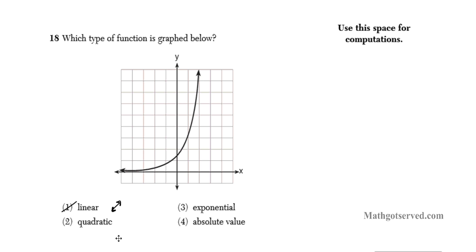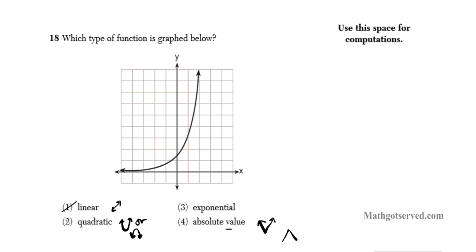A quadratic has a square in it — it's a u or a parabola facing either up or down. But this one is neither a parabola facing up nor down; it's just a curve. Remember the absolute value function looks like a V, either facing up or down if a is negative. Is this a V? Nope. So we know the answer has to be exponential.